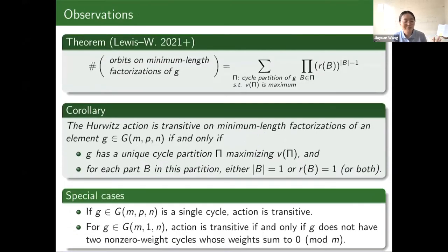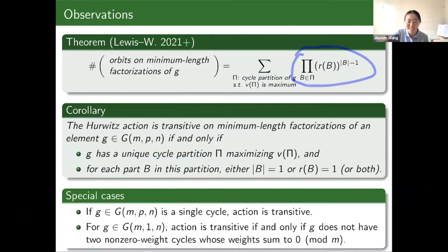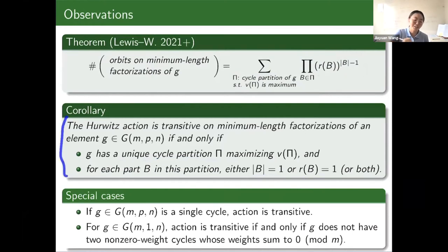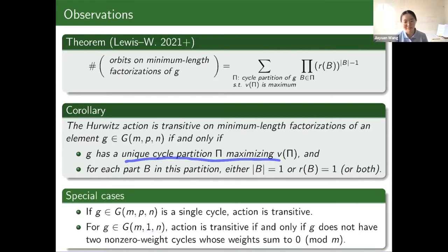From this counting formula, if we want Hurwitz transitivity — one orbit on the left-hand side — then in this summation we should have just one term, corresponding to the element having a unique cycle partition with maximum value. And if we want this product to be one, either the exponent is zero (meaning size of that part equals one, so there is only one cycle in that part) or the base is one. This is our description of Hurwitz transitive elements in G(m,p,n). As a special case, if the element is a single cycle then the action is always transitive. In G(m,1,n) the unique cycle partition with maximum value is where every cycle is in its own individual part.